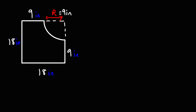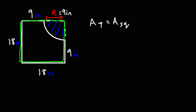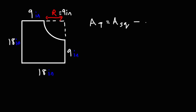In this case, what we need to do is use subtraction instead of addition. The total area is going to be the difference of the area of the square and the area of the quarter circle, which will give us the remaining area of the figure. So it's going to be the area of the square minus the area of the quarter circle.